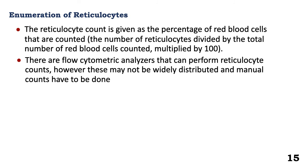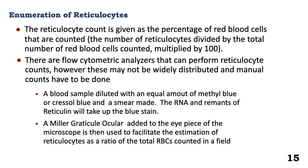Let's look at the enumeration of reticulocytes. The reticulocyte count is given as the percentage of red blood cells counted. Flow cytometers can enumerate reticulocytes easily. However, if these are not widely available, manual counts may have to be done. The blood is diluted with an equal amount of methyl blue or crystal violet, and a smear is made. The reticulum absorbs the blue stain and appears very visible. A Miller's graticule ocular is added to the eyepiece of the microscope when examining the smear, to facilitate the estimation of reticulocytes given as a ratio of the total red blood cells counted in a field.